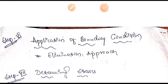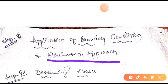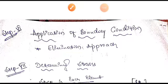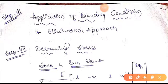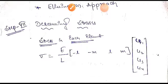Next, we apply boundary conditions. For truss problems, the elimination approach method is recommended because it is easier to calculate displacements. The penalty method would result in many equations that take more time to solve. After applying boundary conditions, we obtain the displacements u1, u2, u3.